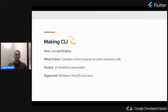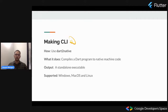What does dart2native do? It compiles the DART program to native machine code. For example, if you want your Hello Singapore application to run on your desktop OS, you use the dart2native command to make it executable. The output is an executable, and yes, it is supported on Windows, macOS, and Linux.